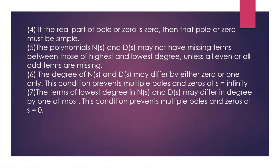The fifth condition: the polynomial must not have any missing terms between the highest and the lowest degree, unless all even or all odd terms are missing.